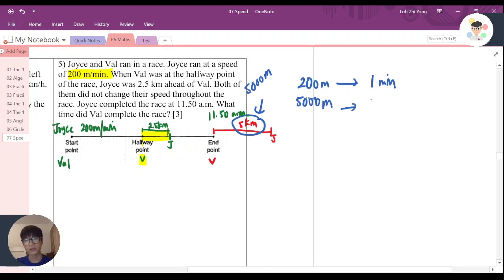So to know 5,000 meters, you use 1 divided by 200 times 5,000, and it's how many minutes? It will be 25 minutes.